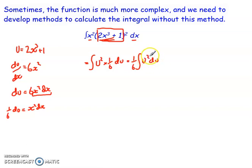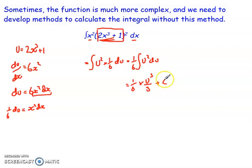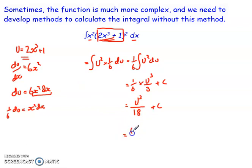Integrating u squared is a lot more straightforward than the original expression. If I integrate that, I get 1 sixth times u cubed over 3 plus c, my constant of integration. Technically it is plus a sixth c, but since we don't know what that constant is, just amalgamate the whole thing into one. So I end up with u cubed over 18 plus c. However, that's my integral in terms of u — we want it written in terms of x, our original variable. So I substitute back in, and I can write that as 2x cubed plus 1, all cubed, over 18 plus c. Now I've integrated the function in terms of the original variable.